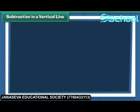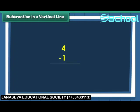Subtraction in a vertical line. Let us now subtract numbers vertically. To do so, write the numbers one below the other. To subtract one from four, write four first. Write one below it. Draw four vertical lines next to four. Cross out one vertical line to subtract one. How many vertical lines are left? One, two, three — therefore, four minus one is three.